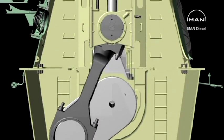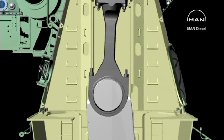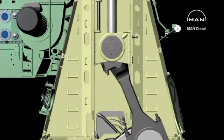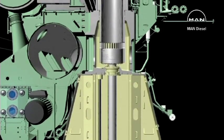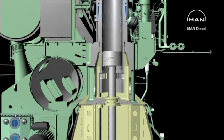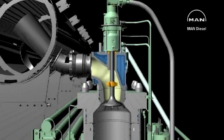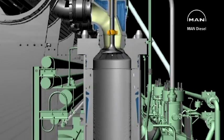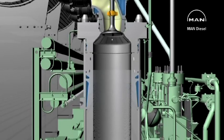This sectional view shows the functions which the most important parts of the engine have to perform. In the upper part of the cylinder, an amount of fuel oil is burned, which causes the temperature, and thus the pressure, to rise in the combustion space.